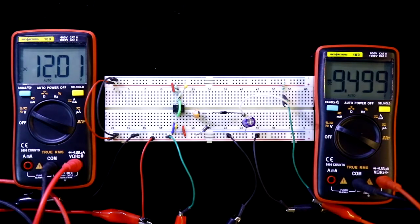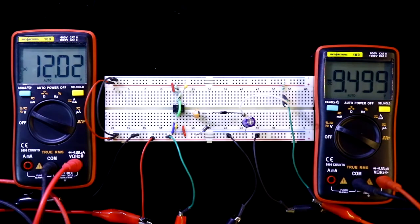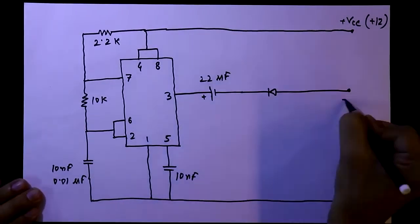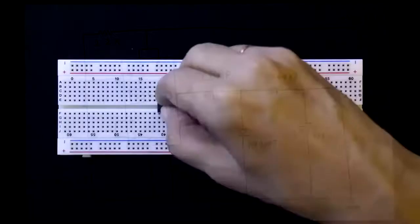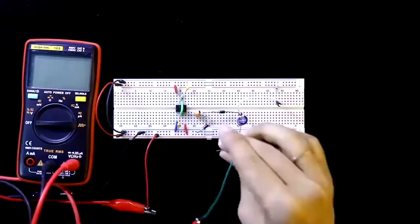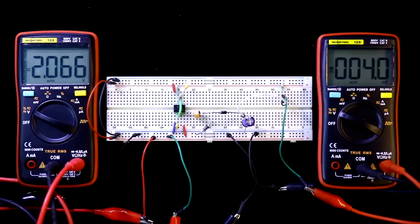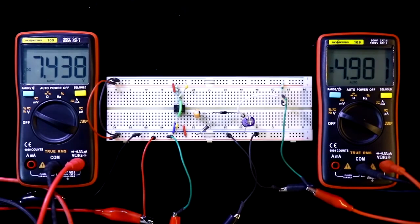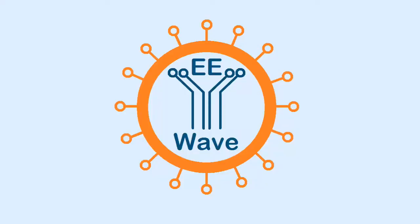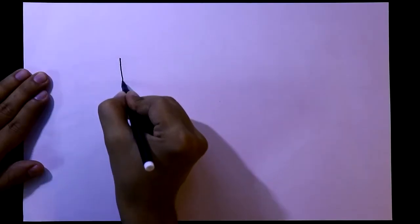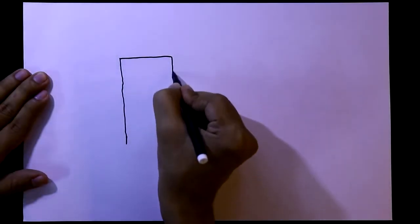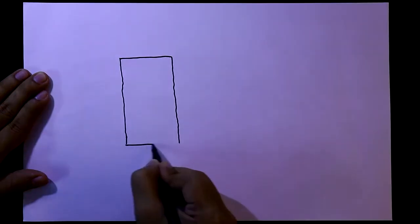We are going to see how to generate negative voltage with a 555 timer IC. So let's get started. For this, we need a 555 timer IC.